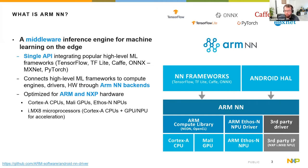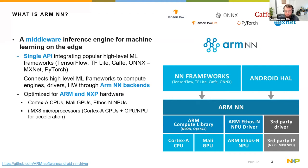ArmNN is also optimized for Ethos-N NPUs. The Ethos-N backend is not included directly in the ArmNN repository, so if you have Ethos-N available on your device you have to pull it from a separate repository — I have links on other slides. The last thing it is optimized for is the i.MX8 microprocessors, which are multimedia microprocessors. Some are targeted for machine learning, some for graphics or displays. These have Cortex-A CPUs and a dedicated NPU with a third-party driver available for ArmNN, which enables acceleration.